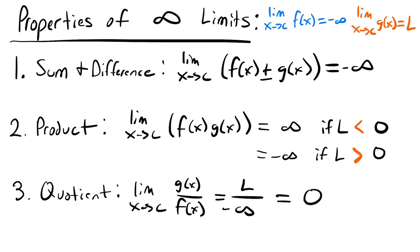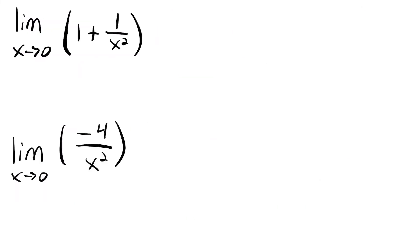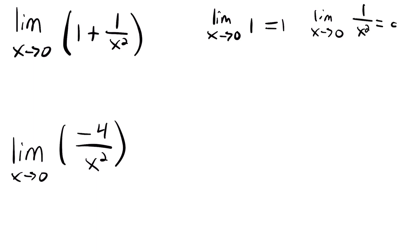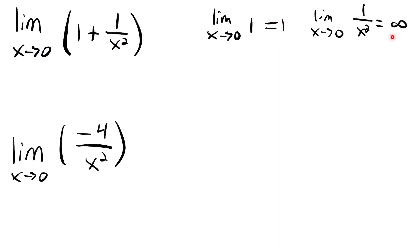Let's see these properties in action. For the limit as x approaches 0 of (1 plus 1 over x squared): the limit of 1 is 1 (finite), and the limit of 1 over x squared as x approaches 0 is infinity. By the sum property, a finite limit plus an infinite limit equals infinity.